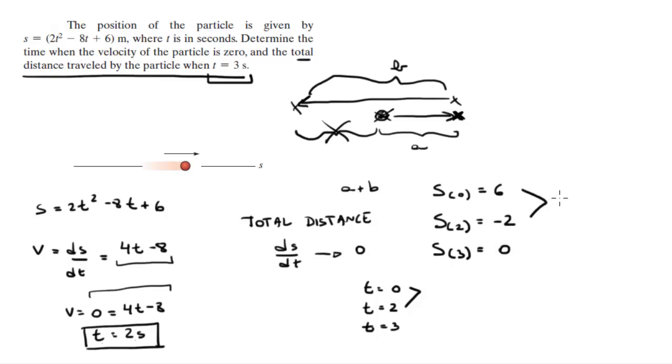So from here to here we travel 8 meters, and from here to here we travel 2 meters. So all you gotta do is add them up, and the sum is equal to 10 meters. Final answer.